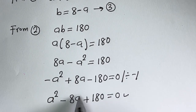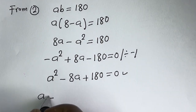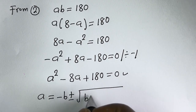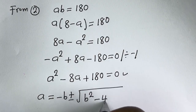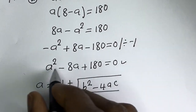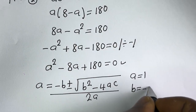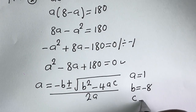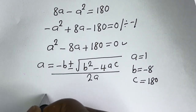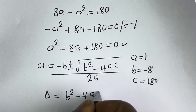This is a quadratic equation. The quadratic general formula is: A equals minus B plus or minus square root of B squared minus 4AC, all over 2A. From this equation, the coefficient of A squared is 1, the coefficient of A is minus 8, and the constant C is 180.